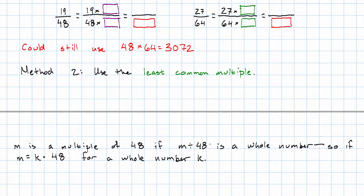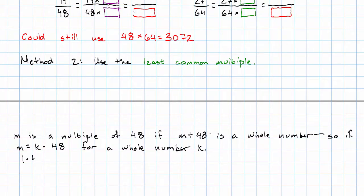So m is a multiple of 48 if m equals some whole number k multiplied by 48. So the multiples of 48 are just 1 times 48 is 48, 2 times 48 is 96, 3 times 48 is 144, 4 times 48 is 192, 5 times 48 is 240, and so on.